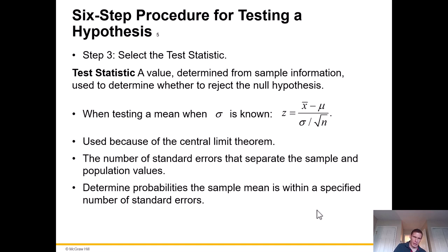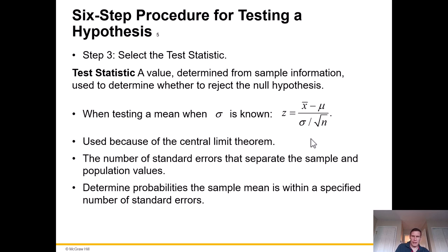Step three is to select the test statistic — a value determined from sample information used to decide whether to reject the null hypothesis. When testing a mean and sigma is known, the formula is Z equals X-bar minus lambda, over sigma divided by the square root of n. We use this because of the central limit theorem: the larger the sample, the more it approaches a normal distribution. This determines the number of standard errors separating the sample and population values.